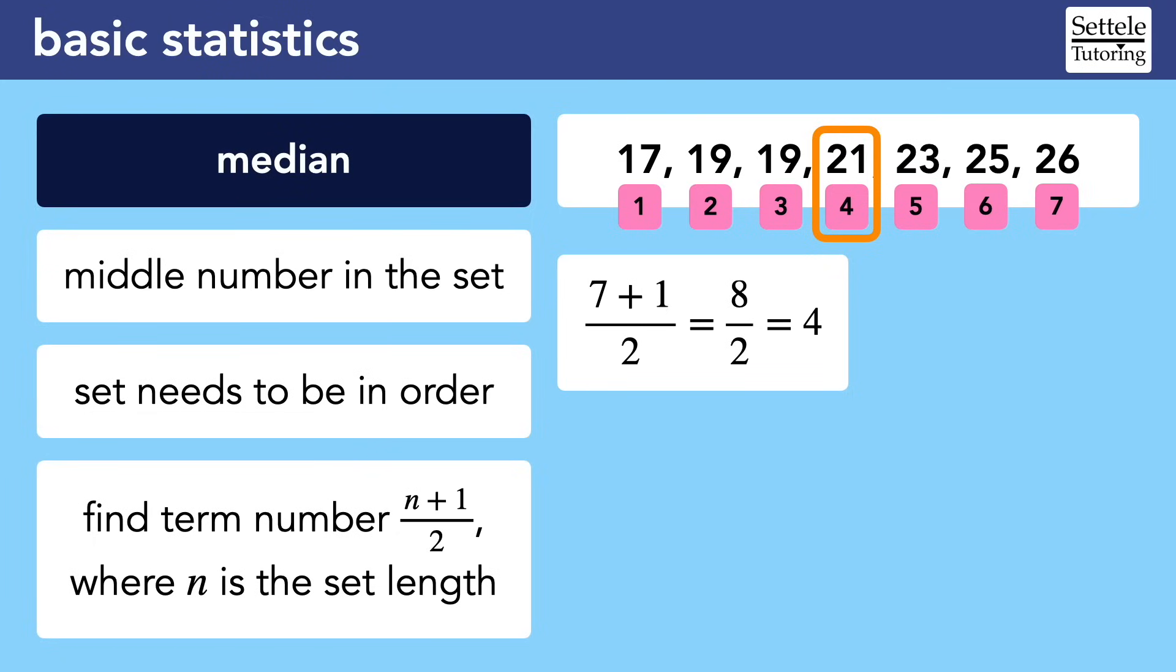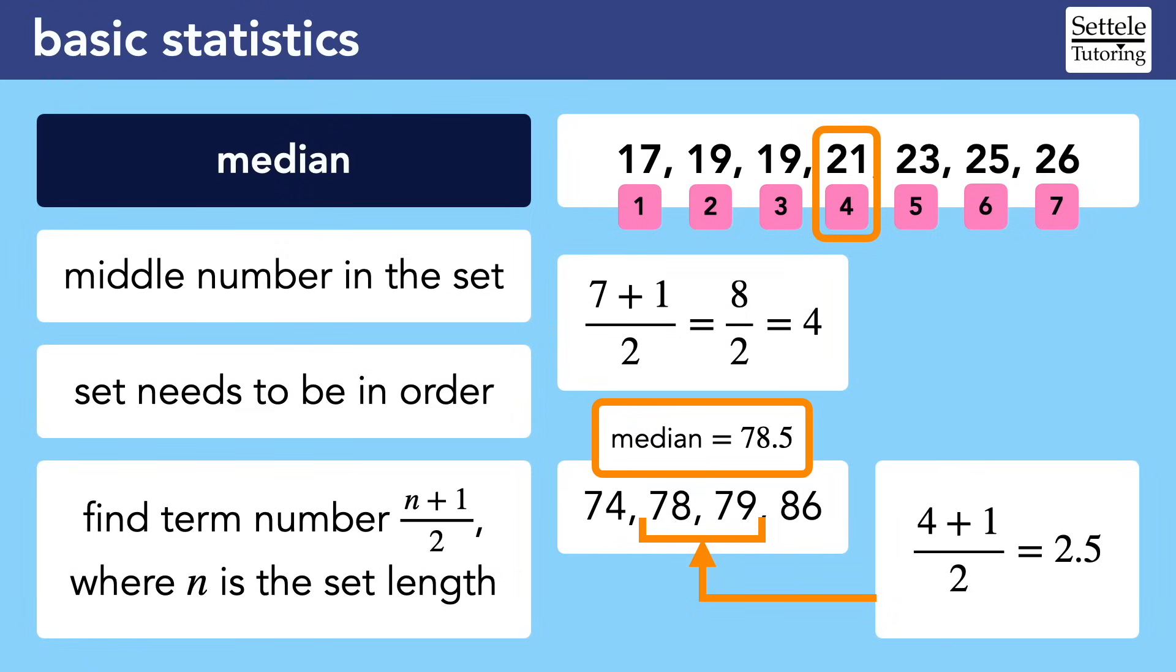However, it still gets annoying when the data set has an even number of values. In this second example, the formula would tell us to find term number 2.5, which clearly doesn't make sense. But you could remember that it's asking us to find the value between terms 2 and 3, which would once again be a median of 78.5. Personally, I don't like this method for finding the median. I worry that the formula itself is hard to remember and that people who use it are likely to say that the median is the result of the formula, so 4 and 2.5, instead of 21 and 78.5. But it's up to you. Do whatever works and prevents careless mistakes.